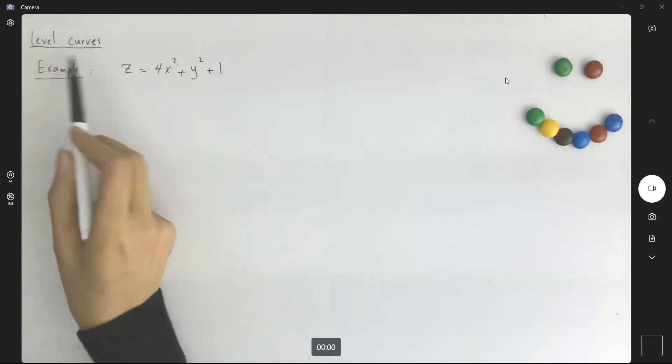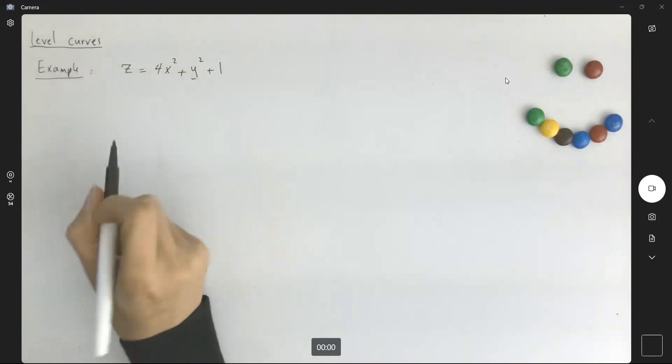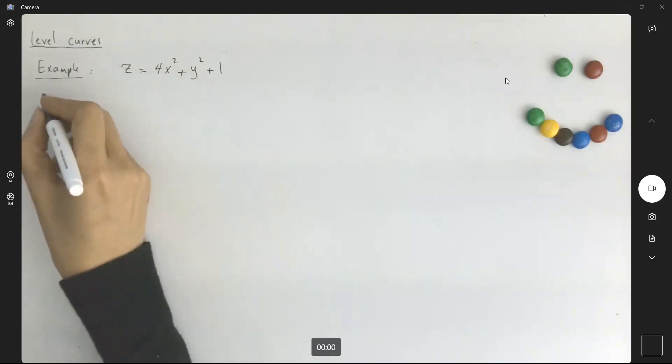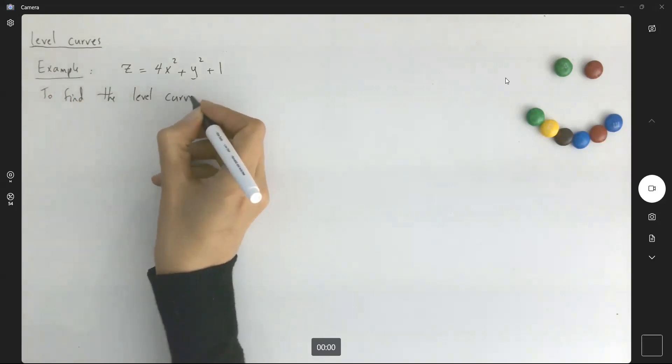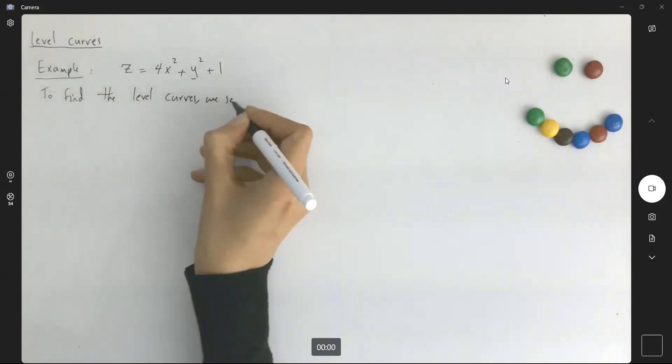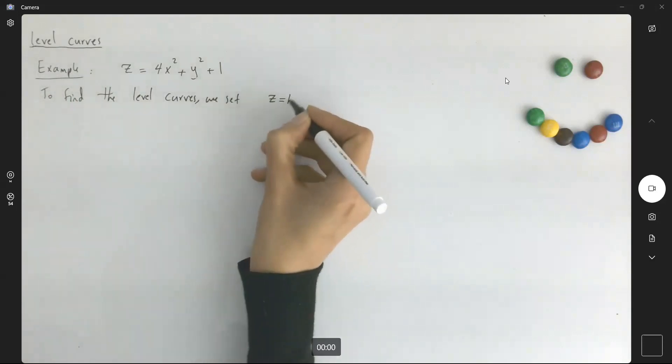Let's take a look at this example. Analyze the level curves of this function. So remember that to find or analyze the level curves, we set z equals to a constant.